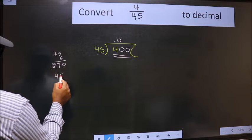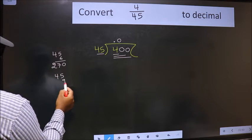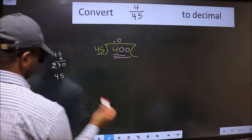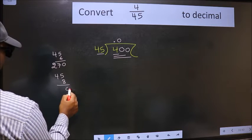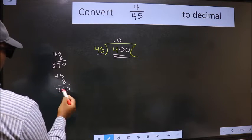So take 9. 9 will exceed, so take 8. 8, 5, 40, 8, 4, 32 are 360.